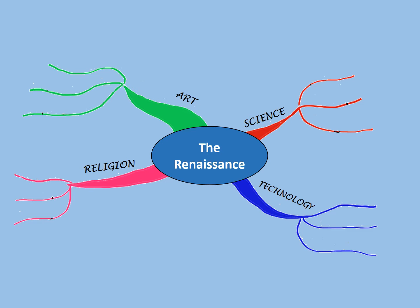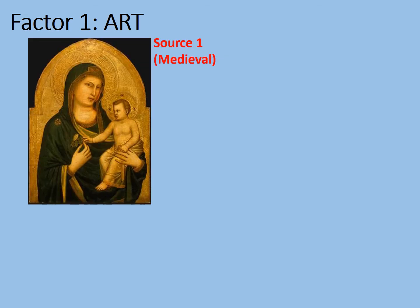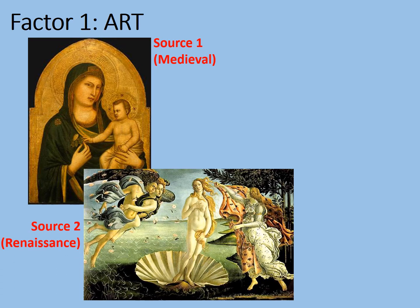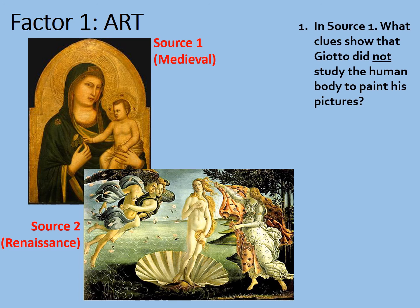Let's look at factor for change number one: art. Source one shows a medieval portrait of Mary with Christ. Is it accurate? You might argue it's quite beautiful, but look at the baby — it looks like a miniature person rather than an actual baby. It is a very stylised picture, not at all realistic in its proportions. Compare that to Botticelli's famous painting, painted in the Renaissance. Notice the detail of the musculature on the people and the natural poses they have, even considering some of them are unrealistically flying.